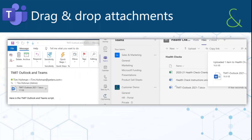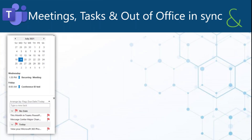Because people still work a lot in their Outlook and in email, Teams now has the ability — I'll do a graphic here — to drag and drop attachments. Your meetings, tasks, and out-of-office messages all sync between Outlook and Teams.